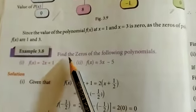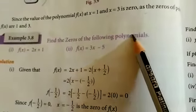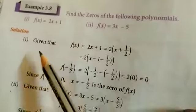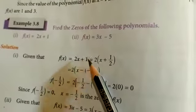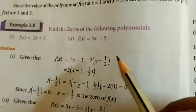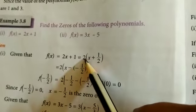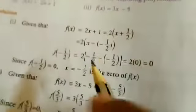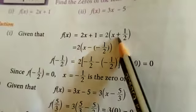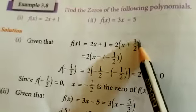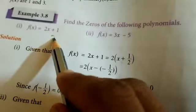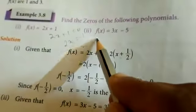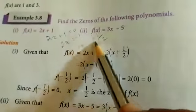Example 3.8: Find the zeros of the following polynomials. First, f of x equal to 2x plus 1. Second, f of x equal to 3x minus 5. For the first one, set 2x plus 1 equal to 0, so 2x equal to minus 1, therefore x equal to minus 1 by 2.